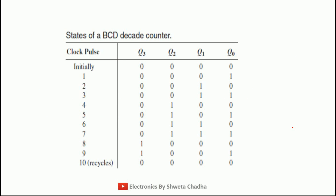This is how your decade counter can count: starting from 0, 1, 2 — in binary: 0000 is 0, 0001 is 1, 0010 is 2, and so on. After 9 (which is 1001), it is again going to start from 0. A decade counter can count a total of 10 states starting from 0 to 9. Hence, the modulus of a decade counter is 10.